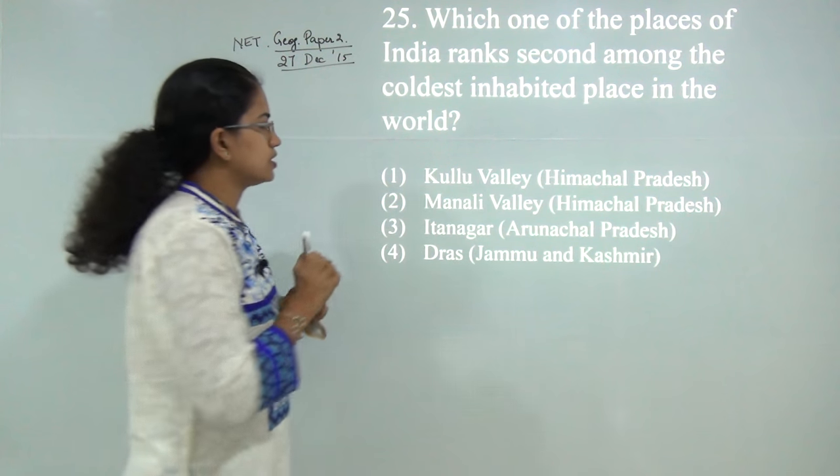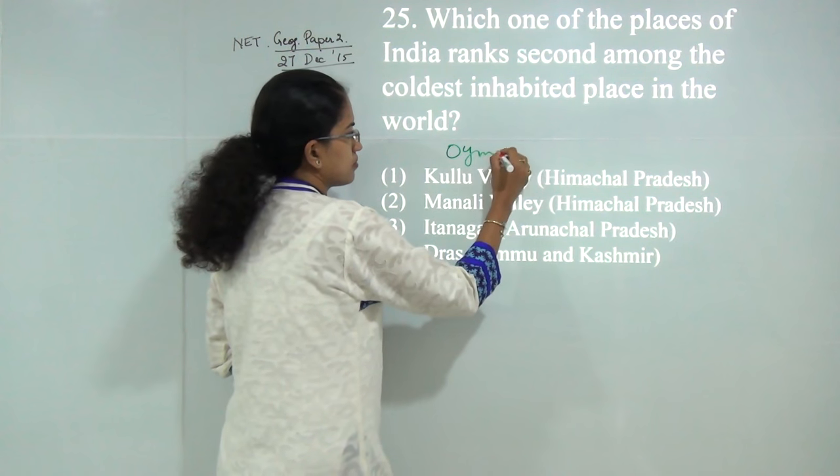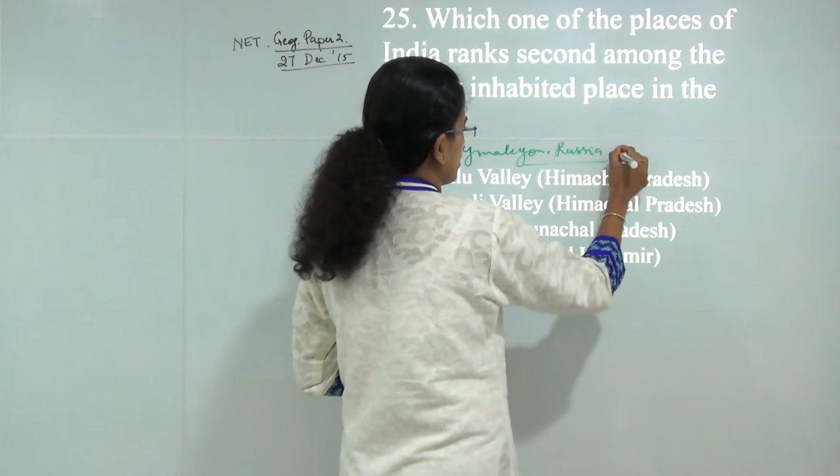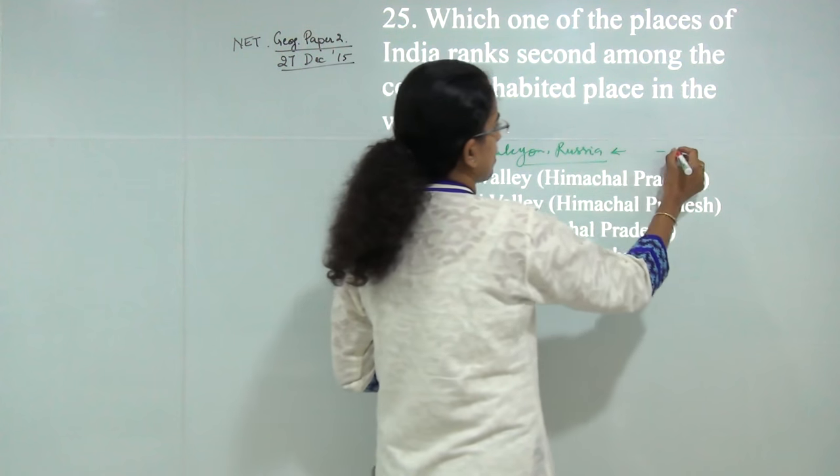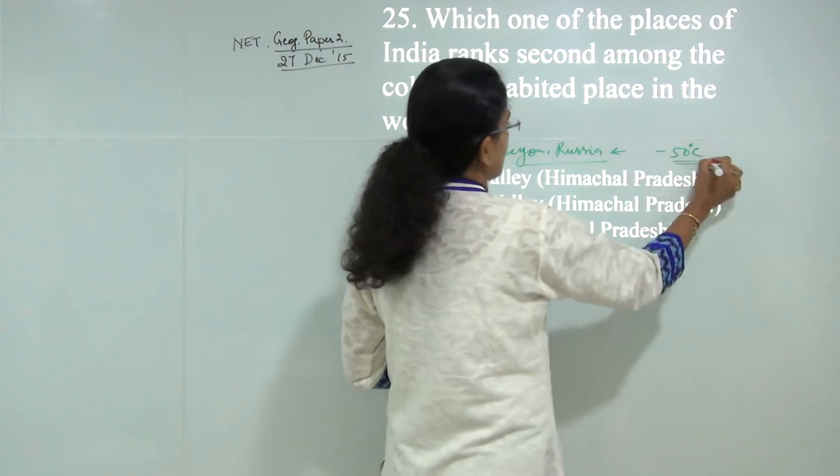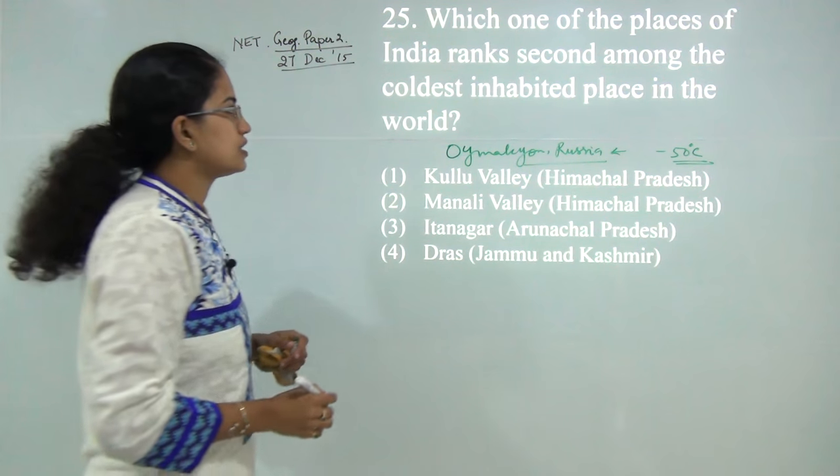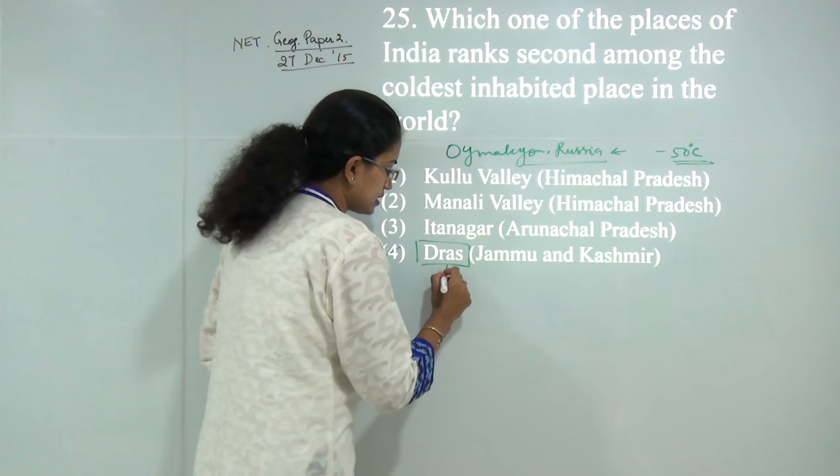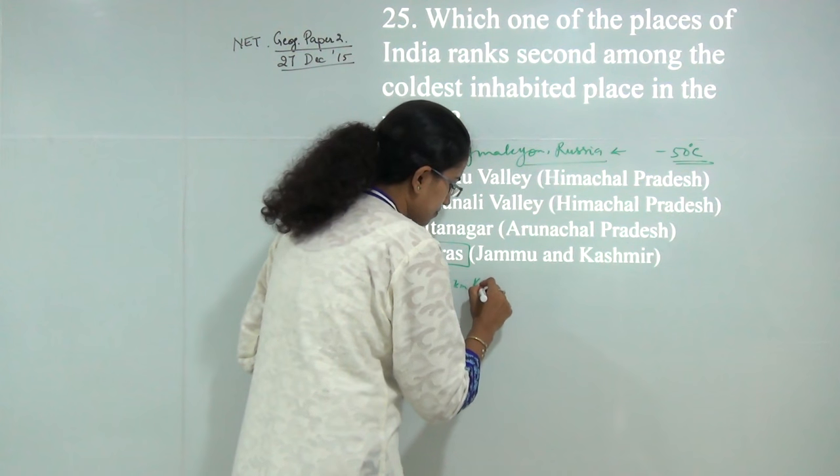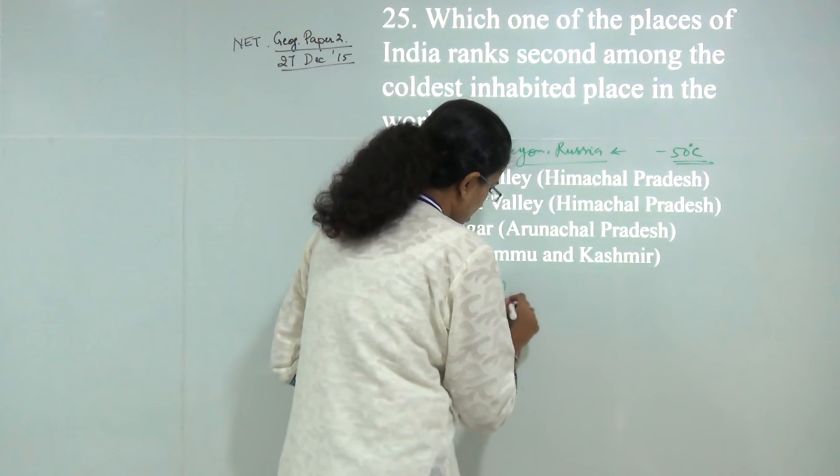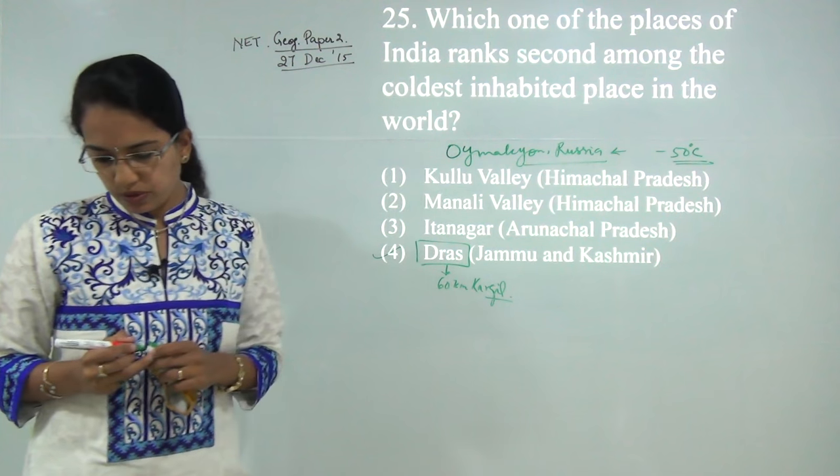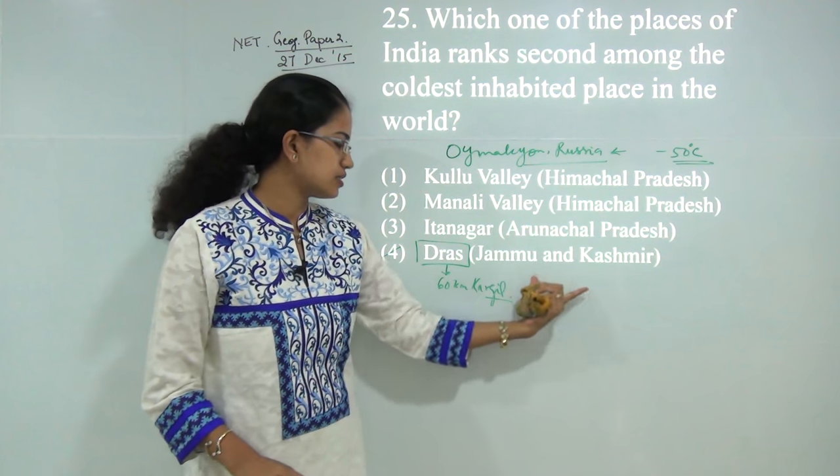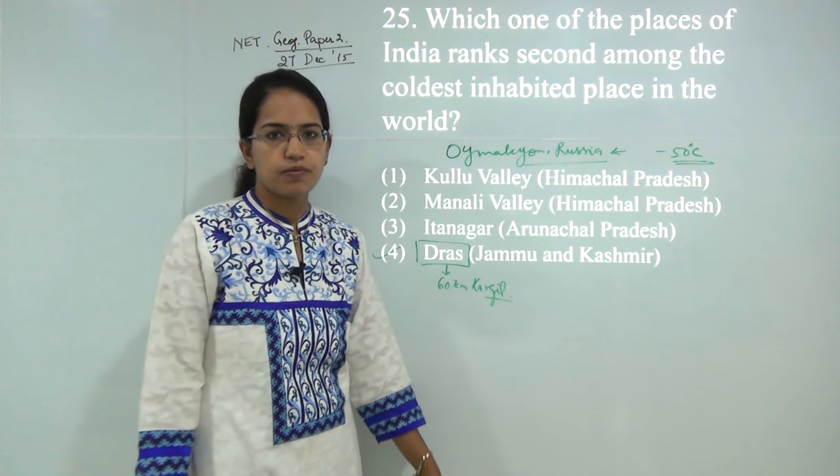Which place in India ranks second among the coldest inhabited places on earth? You have Oymyakon in Russia, a very remote village with minus 50 degrees Celsius—the coldest inhabited place. Next is in India: Dras, located 60 kilometers from Kargil in Jammu Kashmir. The correct answer is 4, Dras.